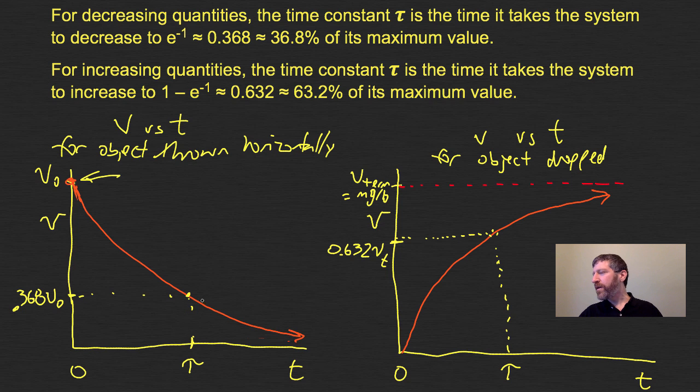The longer it takes to get to 36.8% of V initial, the longer this whole decay takes. Similarly, the longer it takes to get to 63.2% of V terminal, the longer this entire motion. This is a way we can express how long this process takes.